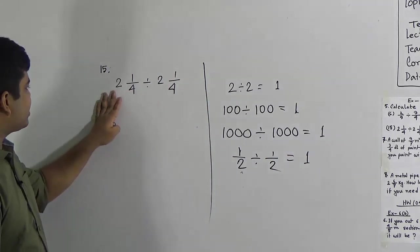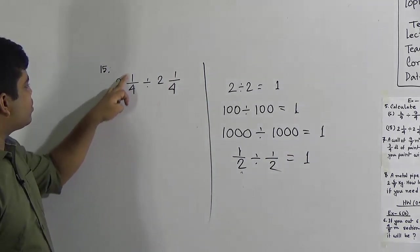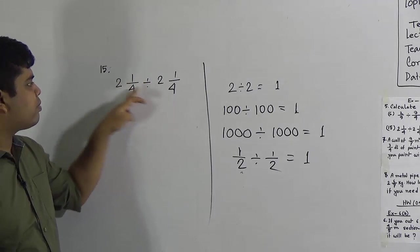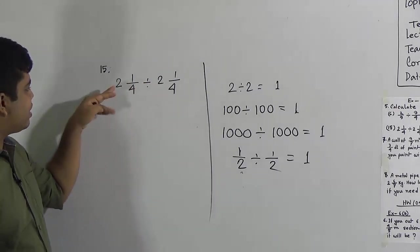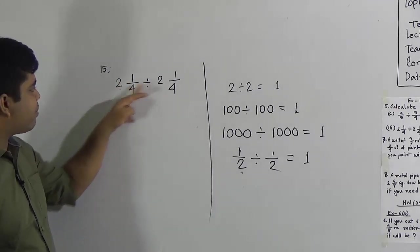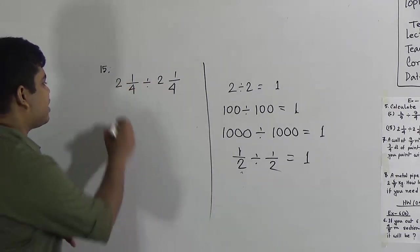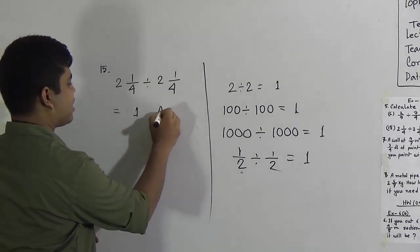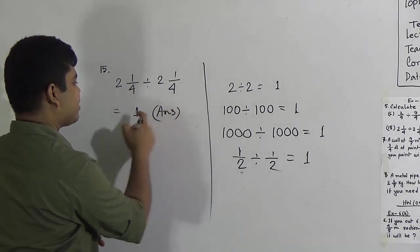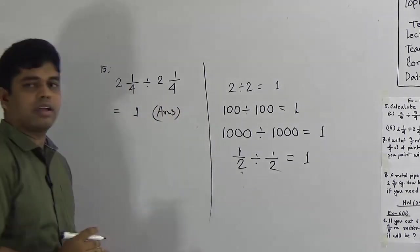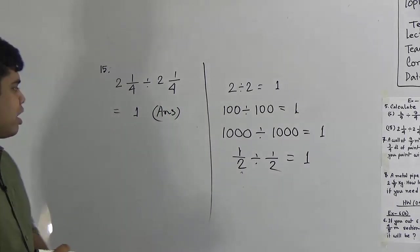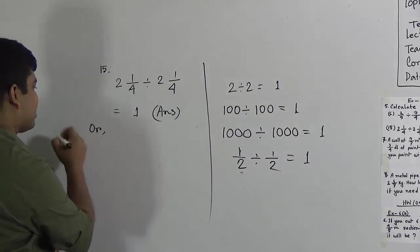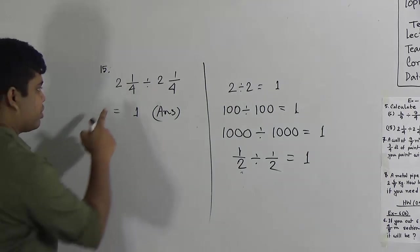Notice that in question 15, both numbers — 2 and 1/4 — are the same. So if we divide this number by itself, we get 1. That is the answer. You can solve this math directly. You can also use the previous method.